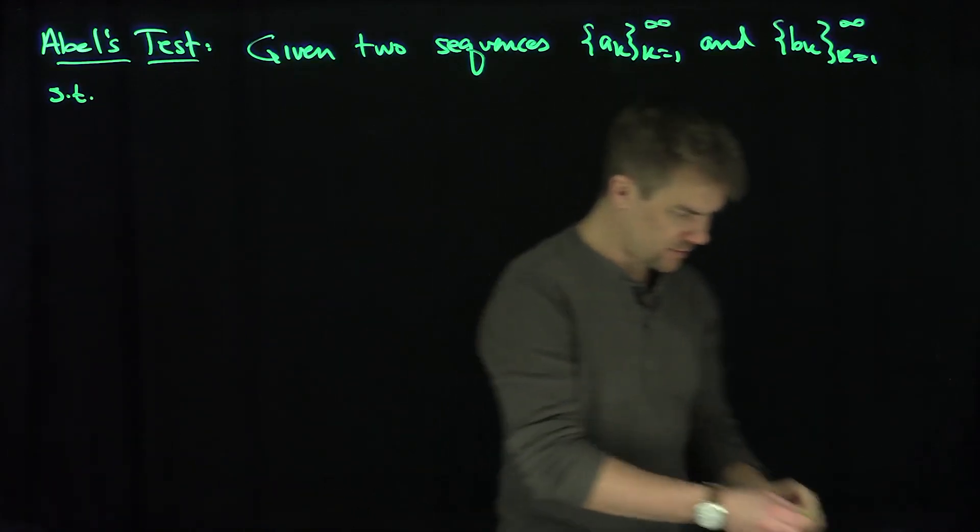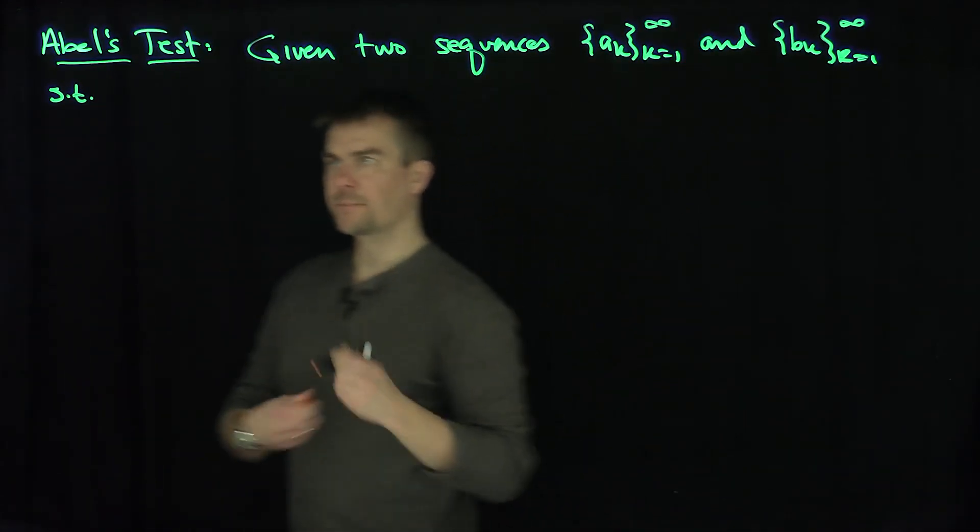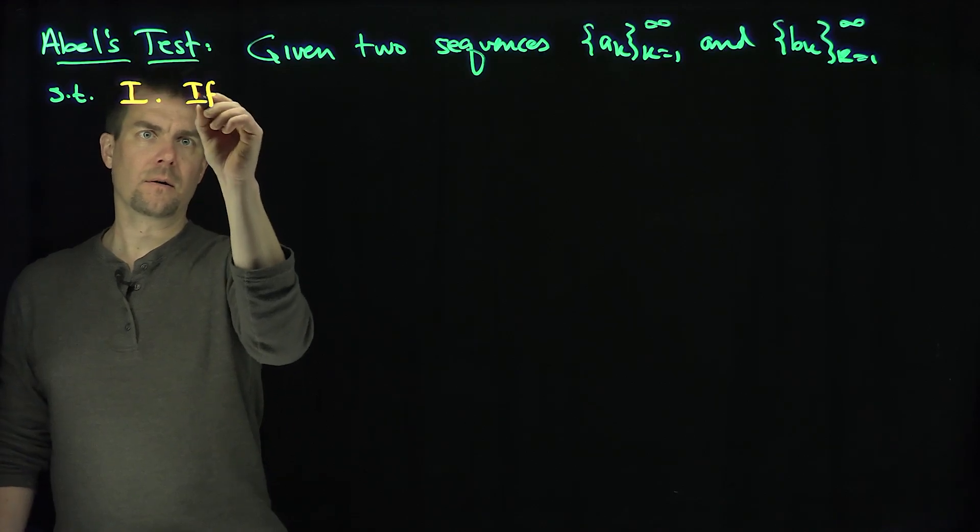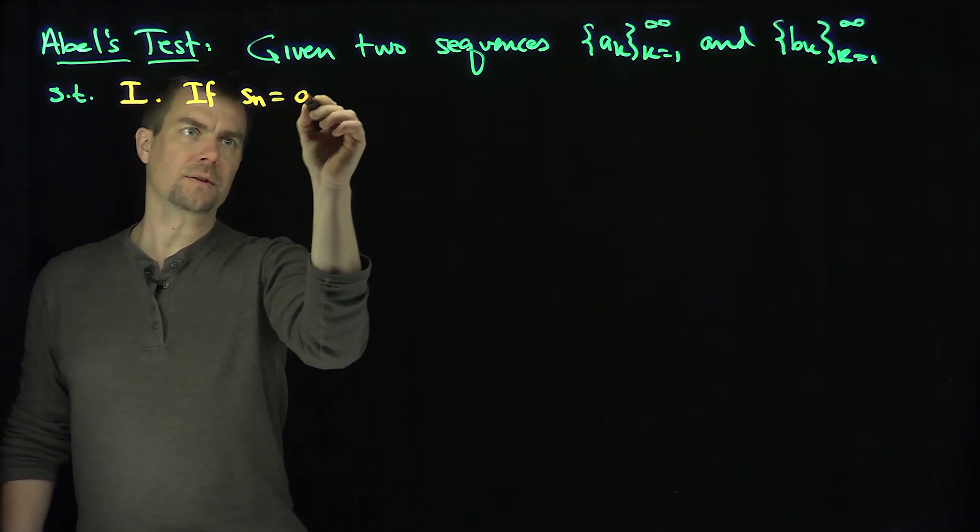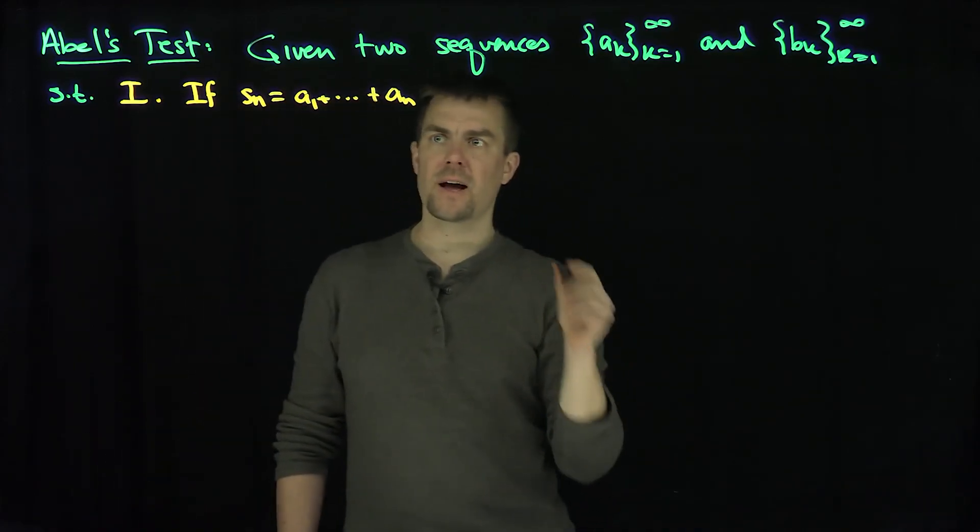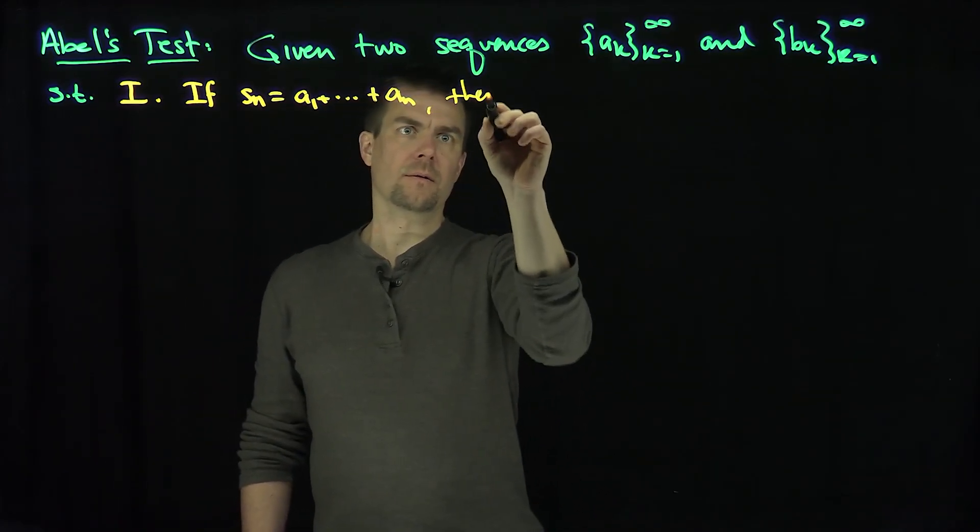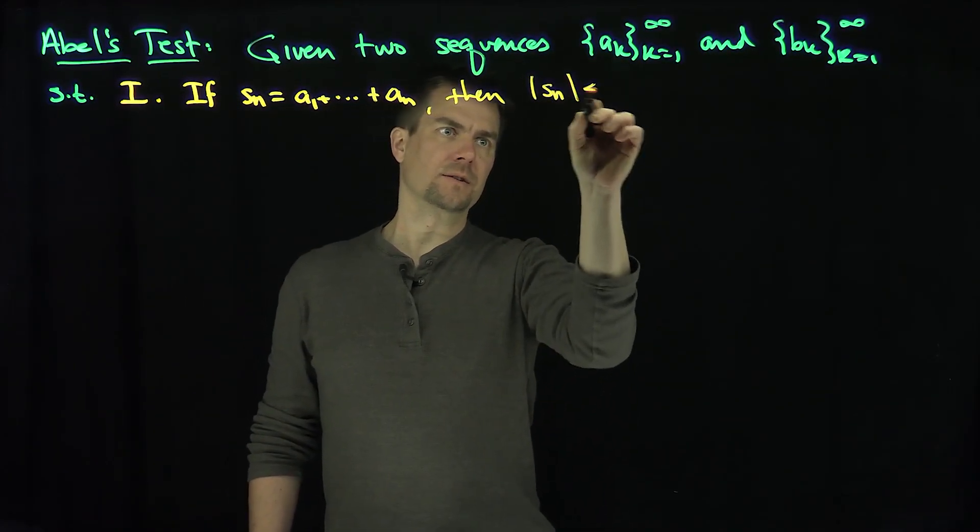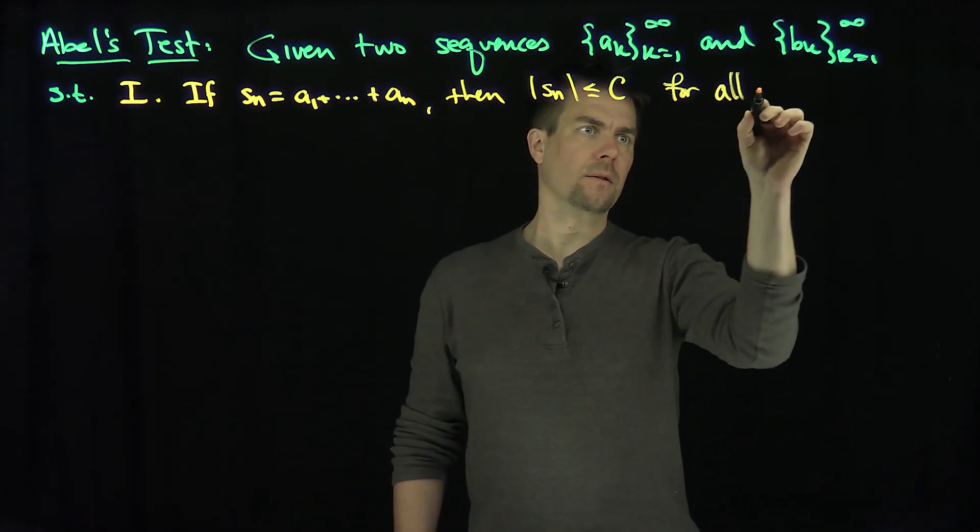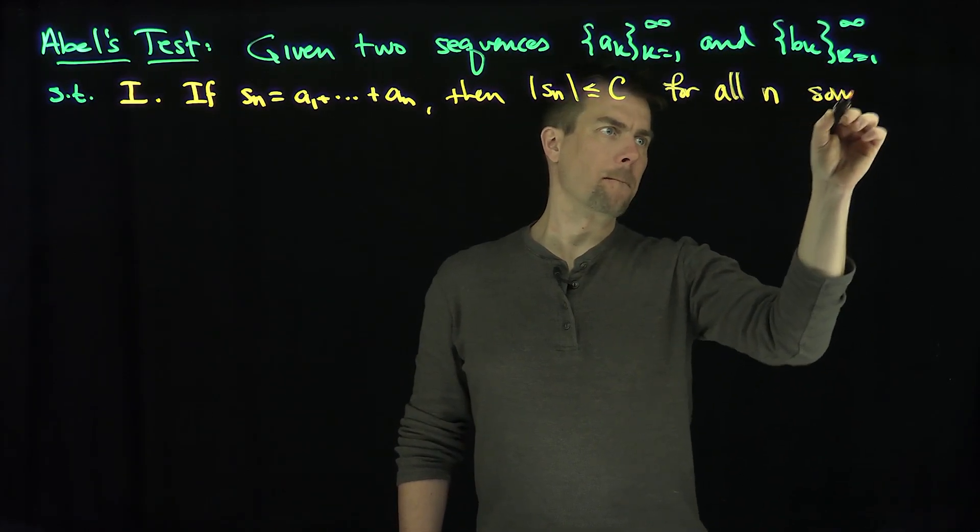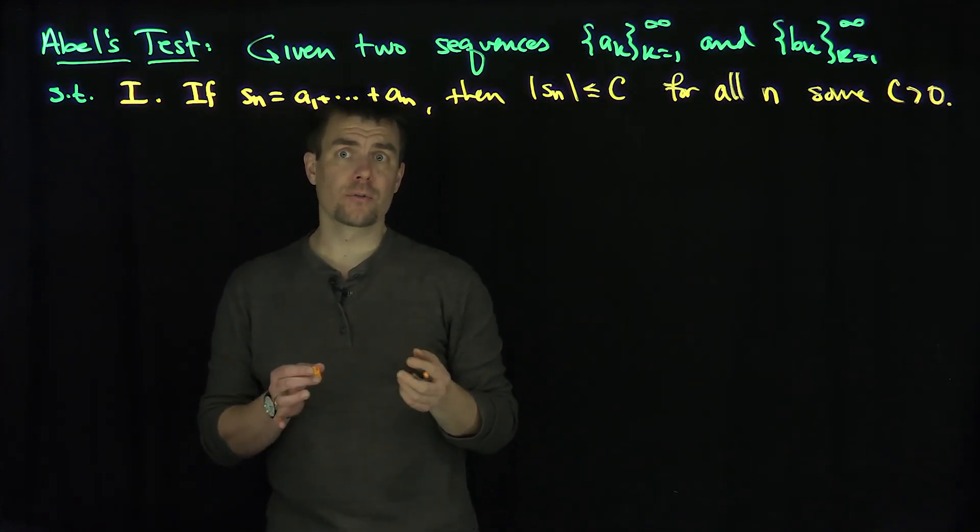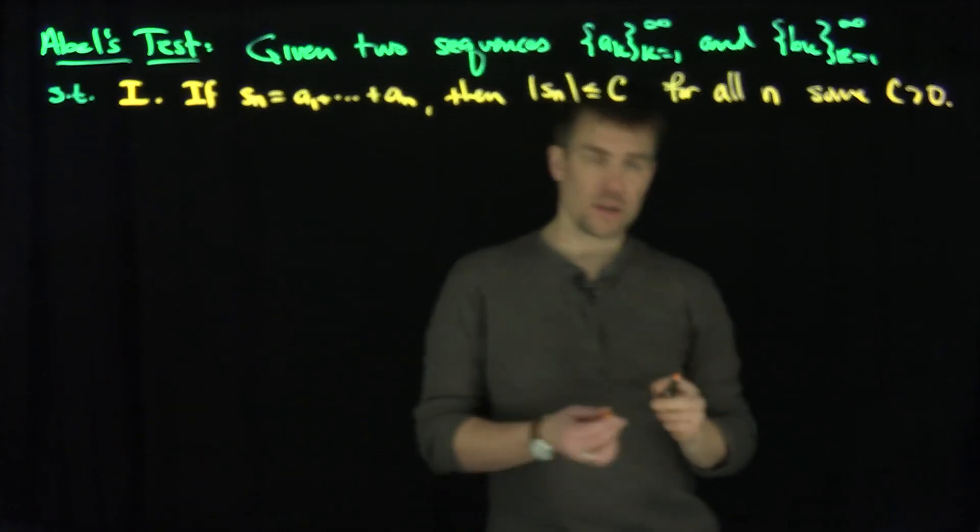What are our conditions on these sequences? The first condition is that if S_n equals a_1 plus...plus a_n, the partial sums of the a_n, then S_n is less than or equal to c for all n and some c. In other words, the S_n, the partial sums of the a_n sequence, are uniformly bounded.